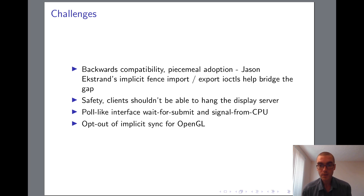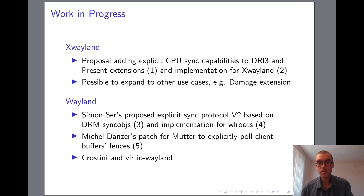Looking at all of these challenges, none of them seem fundamentally intractable, and indeed in some cases workable solutions already exist. Hopefully by this point I've made a reasonable argument for why moving towards an explicit sync model is something we should pursue on the display server side. To conclude, I'd like to go over some of the work already being done to this end. For my own part, I've tried to make progress on the X11 side by proposing additions to the DRI3 and present extensions, adding support for explicit sync based on DRM sync objects, along with an implementation for XWayland. Because realistically, even though the Linux desktop is transitioning to Wayland, X11 applications aren't going away any time soon, and so XWayland will likely remain an important part of the graphics stack for the foreseeable future.